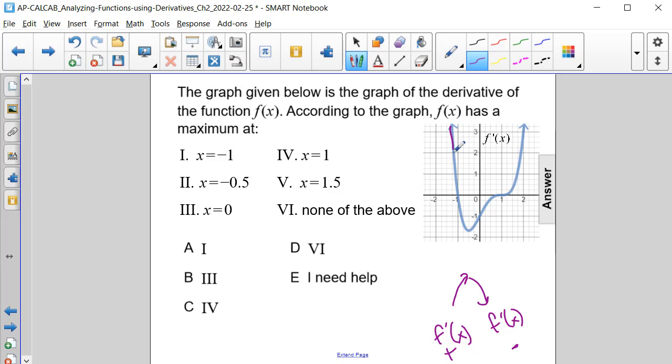It is positive in this section, and then it becomes negative after x equals negative 1. So that's going to be one maximum.